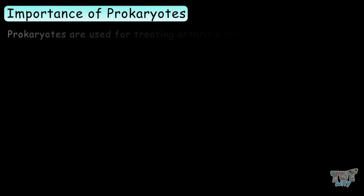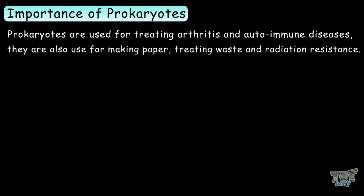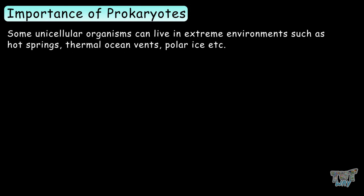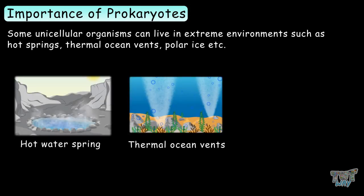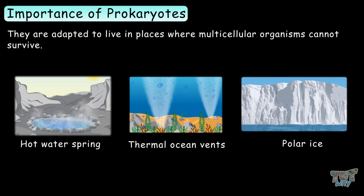Now let's learn the importance of prokaryotes in our environment. Prokaryotes are used for treating arthritis and autoimmune diseases. They are also used for making paper, treating waste, and radiation resistance. Some unicellular organisms can live in extreme environments such as hot springs, thermal ocean vents, or polar ice, and they are adapted to live in places where multicellular organisms cannot survive.